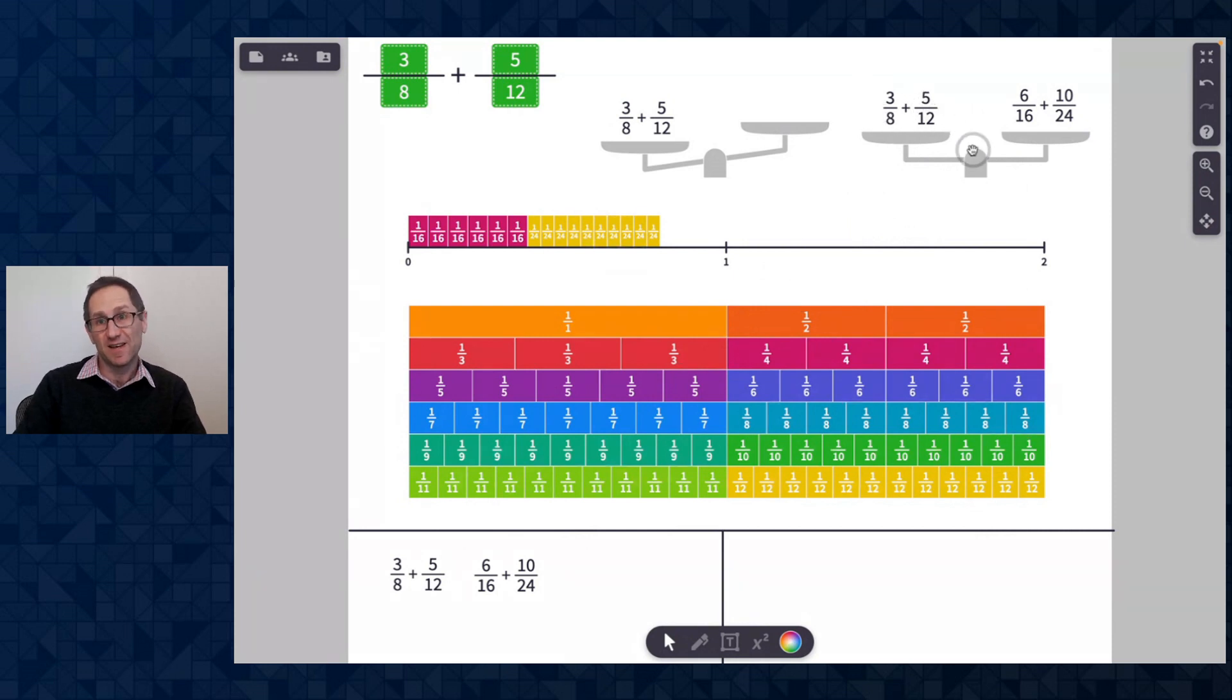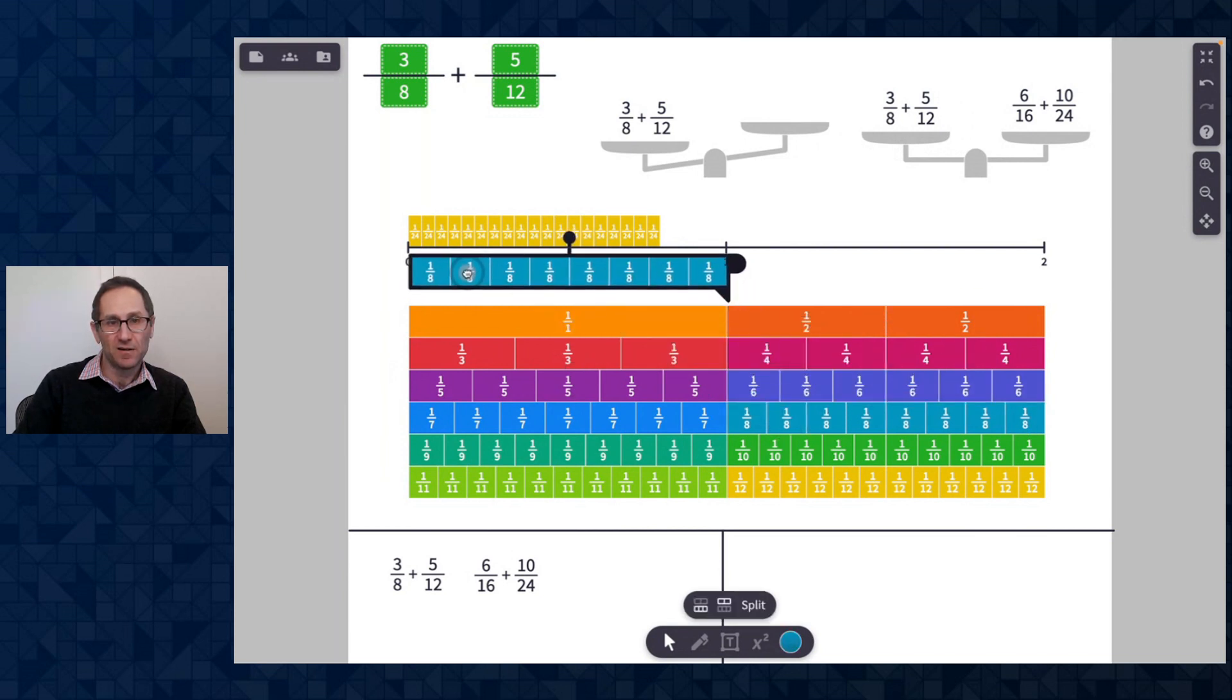So 3 eighths and 5 twelfths is the same as 6 sixteenths and 10 twenty-fourths. I don't have common denominators yet. I'll hit the Rename button. Oh, and that's really nice. I see now that they're both in twenty-fourths. So that 3 eighths, I'm going to pull up the 3 eighths again here just to get this on the number line. I'll make this 3 eighths. And I see that 3 eighths was split into three pieces. And in the twenty-fourths, each eighth was split into 3 twenty-fourths. So that's 3 twenty-fourths, another 3 twenty-fourths, another 3 twenty-fourths. So that becomes 9 twenty-fourths.